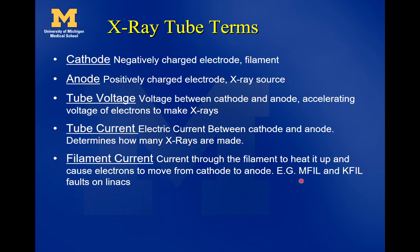You may see M-fill or K-fill faults on the linac. The 'fill' part of that stands for filament. The klystron has a filament in it to create electrons, and the magnetron has a filament in it. When you see M-fill and K-fill faults, you should think that some current should be running through a filament to make it hot enough to produce electrons — and it's not doing that, so the linac is faulting out.